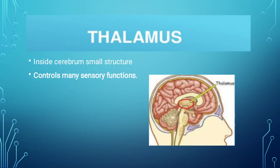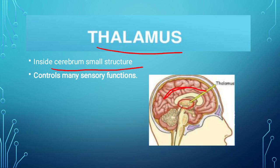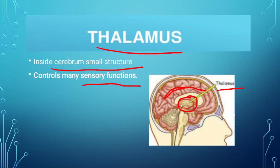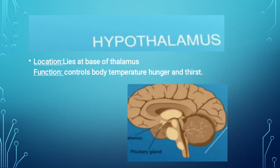The second division of the forebrain is the thalamus. The thalamus is present inside the cerebrum as a small structure. It is a small structure located inside the cerebrum. Its function is that it controls many sensory functions — our five senses and their functions are all controlled by the thalamus.